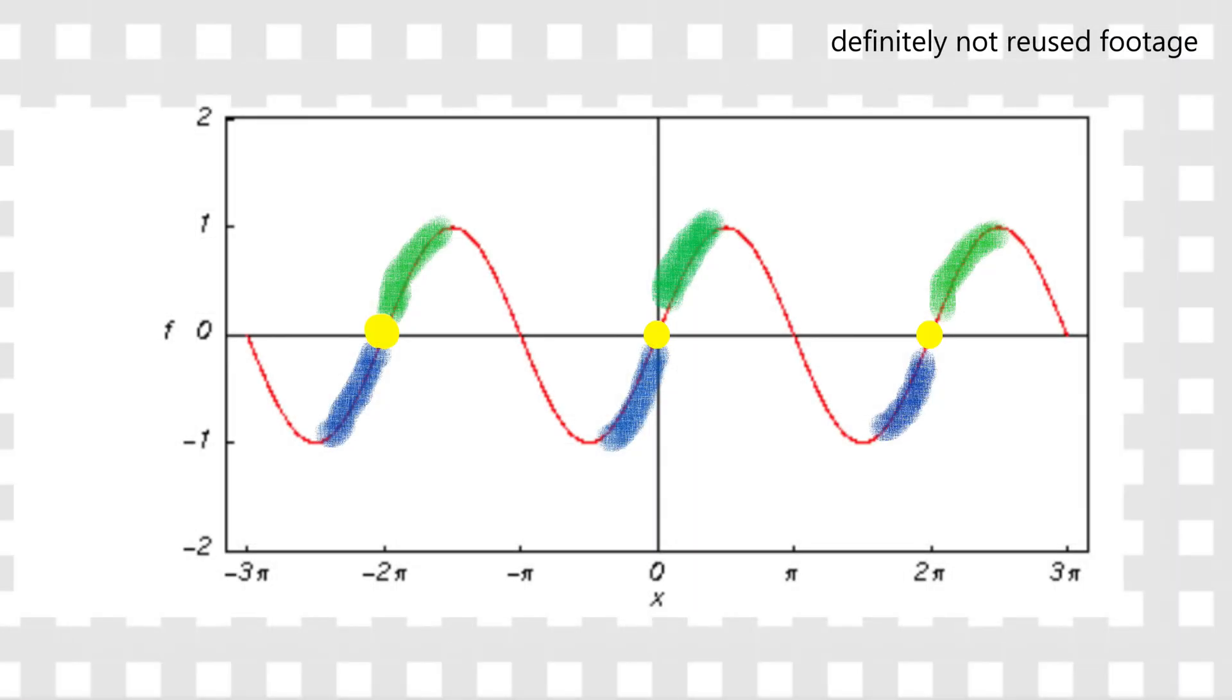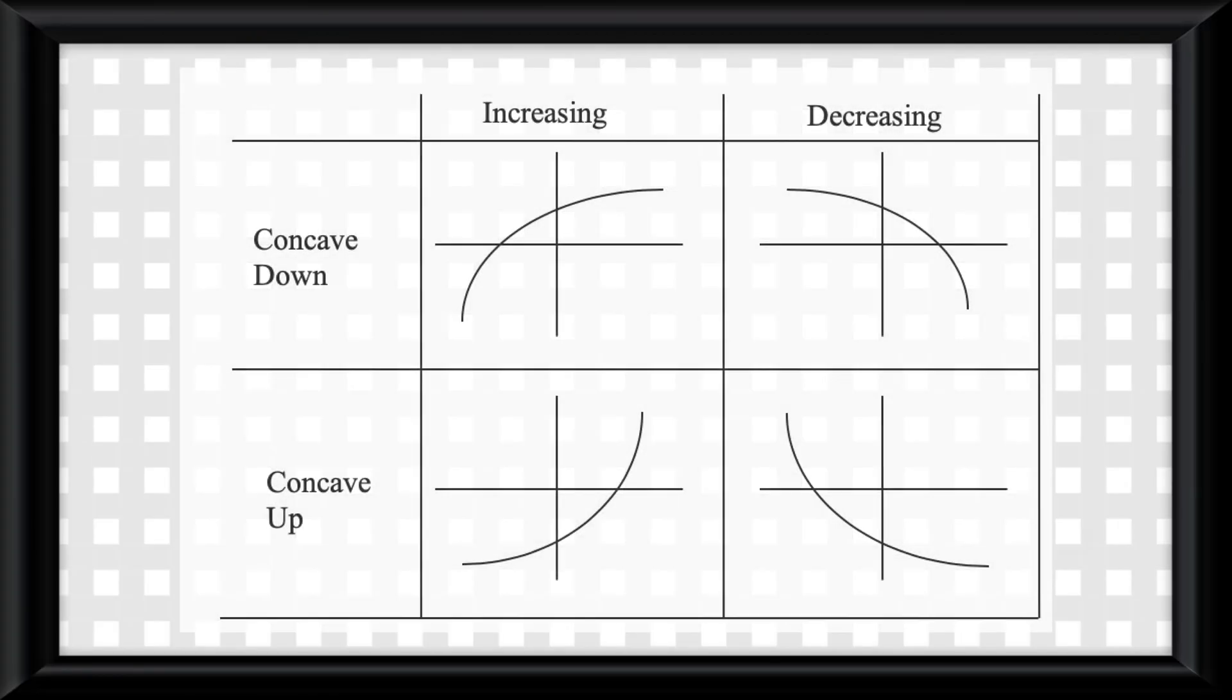You'll see that on a sine and cosine graph, the concavity changes at wherever the line passes the midline. And as a reminder on concavity, just memorize this image here.